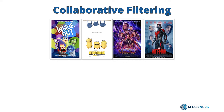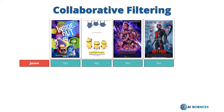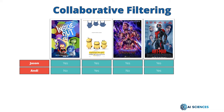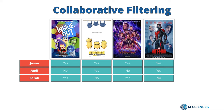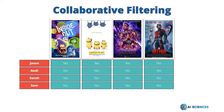But this time, instead of considering the properties of these movies, we are going to consider how our friends actually rated these movies. Let's say our friend Jason liked all four movies. Our friend Andy didn't like Inside Out and Avengers but liked Minions and Ant-Man. And our friend Sarah liked Inside Out and Avengers but also liked Avengers and Ant-Man.